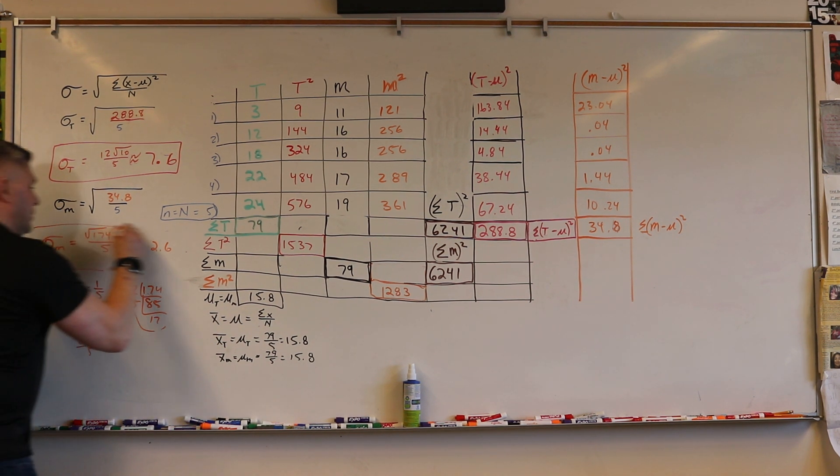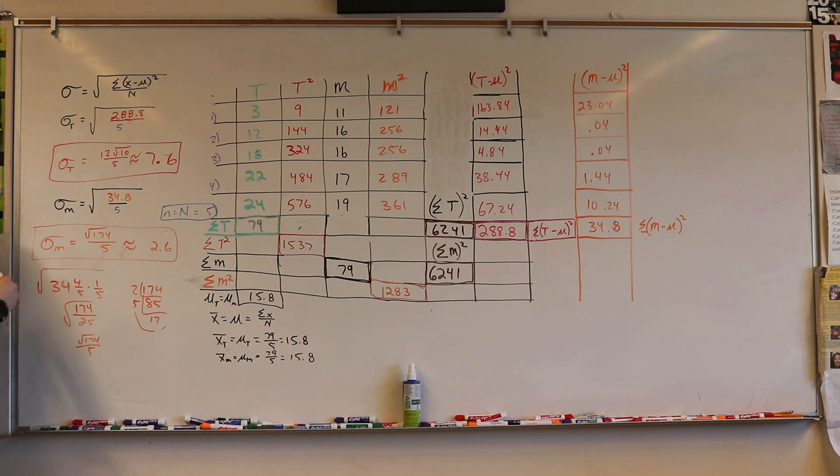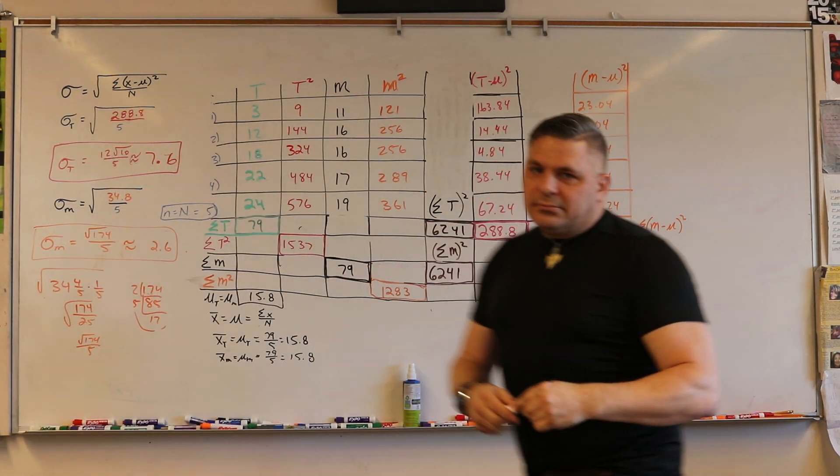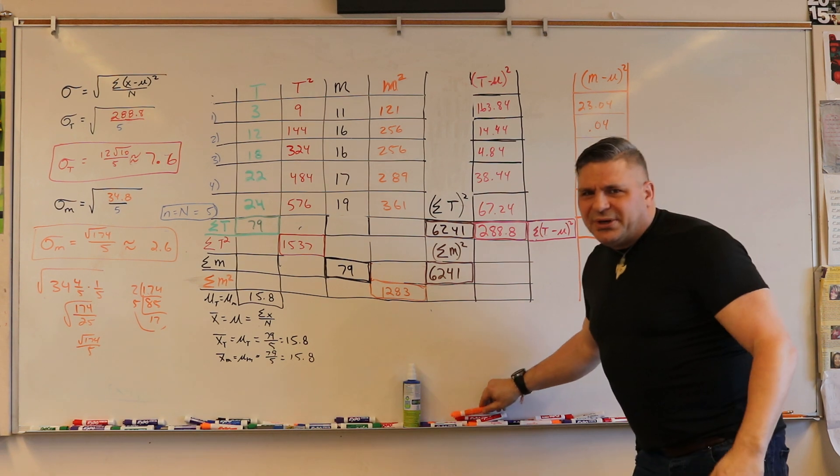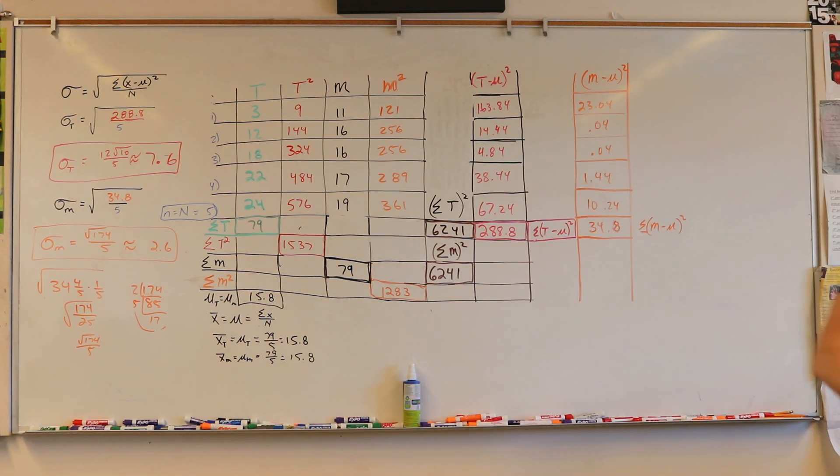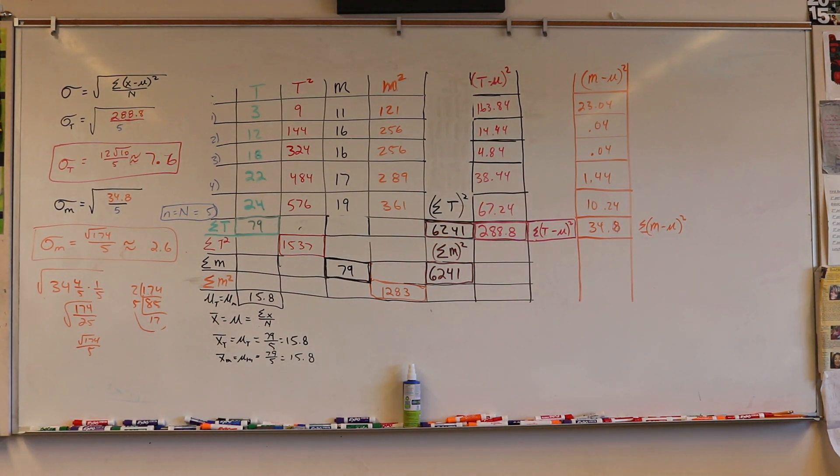So that's the difference between a population standard deviation of Manly versus Taylor. This is Manly and this is Taylor. And hopefully that was pretty good. I think it's recording still, good, so I can stop.